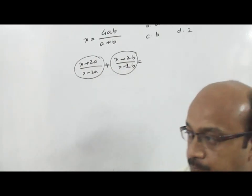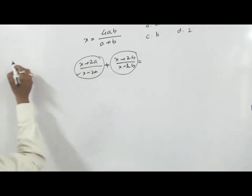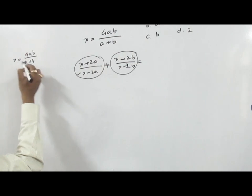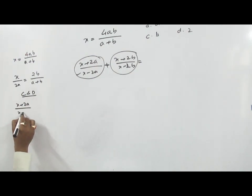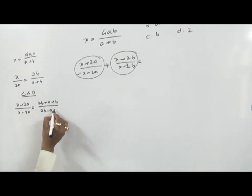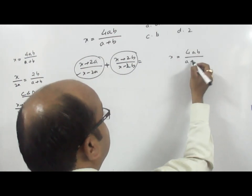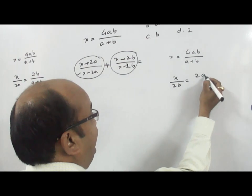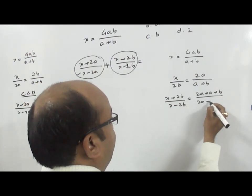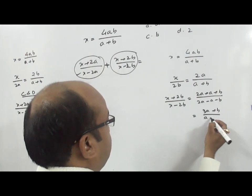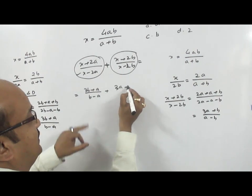I am going to discuss the entire solution and then a shortcut for this pattern. For the first part, write X is equal to 4AB upon A plus B, then take 2A in the denominator — it becomes 2B upon A plus B. Apply C and D: X plus 2A upon X minus 2A is equal to 2B plus A plus B upon 2B minus A minus B, which is 3B plus A upon B minus A. Same way, write X is equal to 4AB upon A plus B, take 2B — it becomes 2A upon A plus B. Apply C and D: X plus 2B upon X minus 2B is equal to 2A plus A plus B upon 2A minus A minus B, which is 3A plus B upon A minus B. Now place these two values together: it would be 3B plus A upon B minus A, plus 3A plus B upon A minus B.